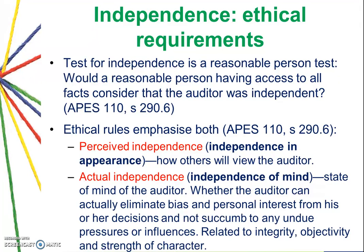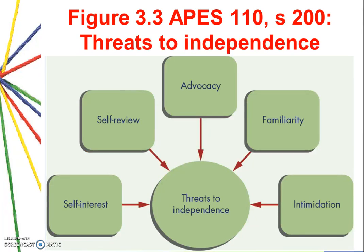There are two types of independence: independence in appearance and independence of mind. There are five threats to independence: self-interest, self-review, advocacy, familiarity, and intimidation. There is a case activity in your tutorial and lecture folder — please look at the question and the solution so that you can understand the threats to independence more clearly.